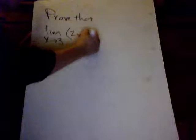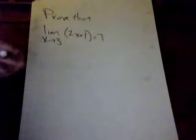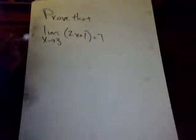So, let's say you have the problem: Prove that the limit as x approaches 3 of the function 2x plus 1 is equal to 7. Where do we start now? This is the main question that gets everybody. Where do we start?